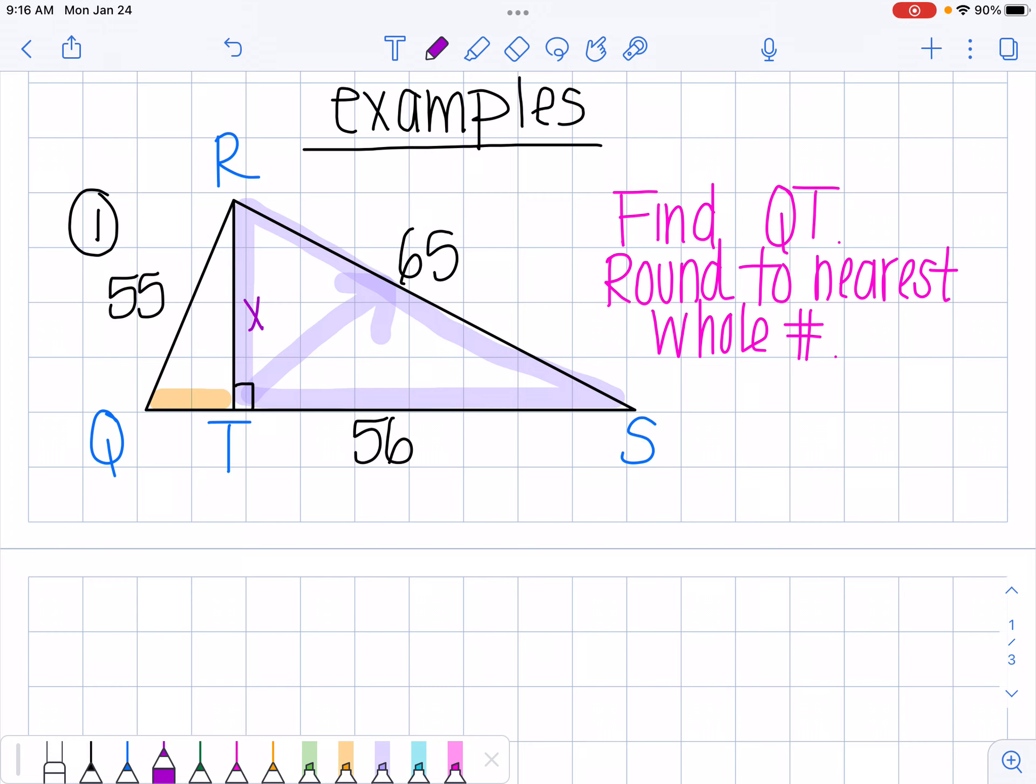And reminder, when you're using the Pythagorean theorem, the c value is the one that's important. The a or the b are your legs of the right triangle, so it doesn't matter if you in this case put x for a or 56 for a. So I'm going to go ahead and set this up.